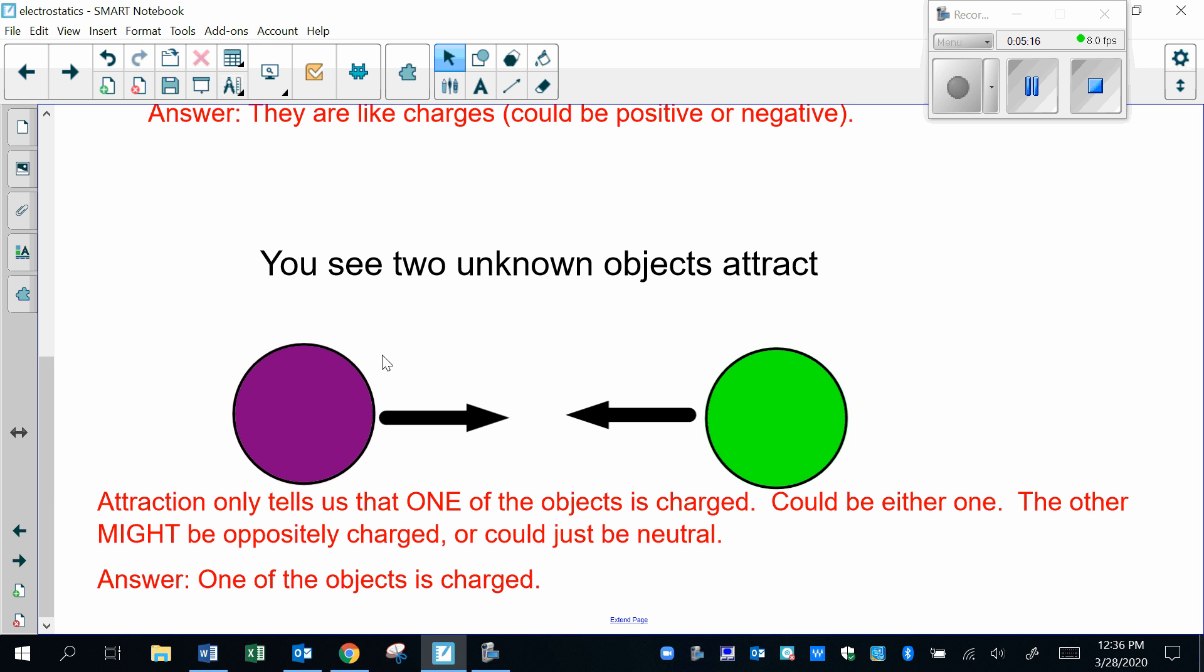What could also be the case? Yeah, sure, maybe they could be opposites, but we can't tell. We can't even tell which one is charged. So what's the shortest answer? One of the objects is charged, and we don't even know which one it is.